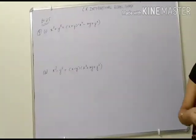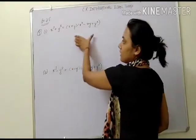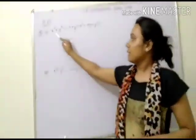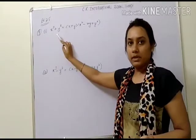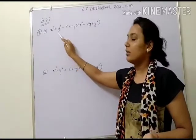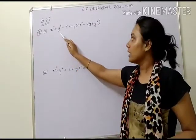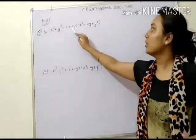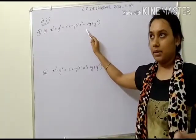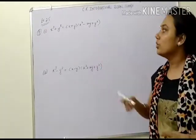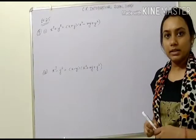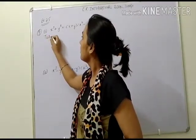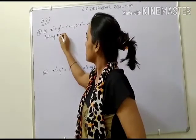In this question, we have to verify that this value is equal to this value. In our LHS, we have only x cubed plus y cubed — we can't simplify anything. But in RHS, we have a very big term. What do we have to do with RHS? We have to solve the RHS.